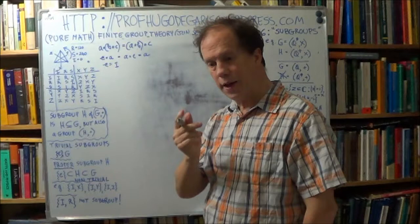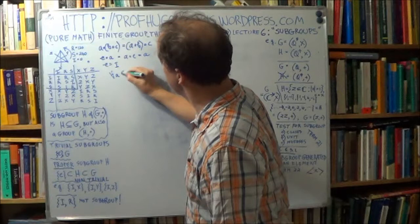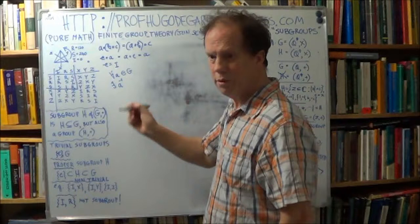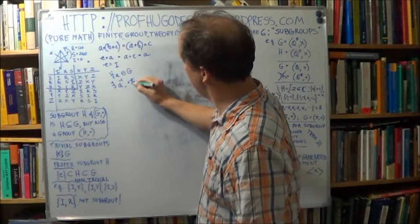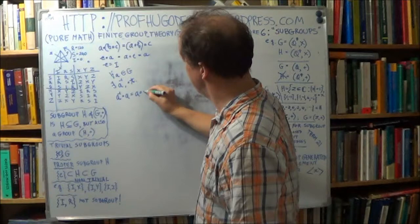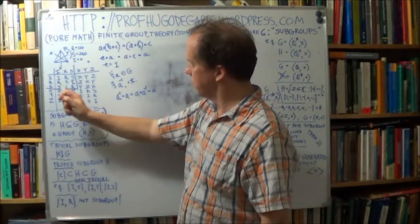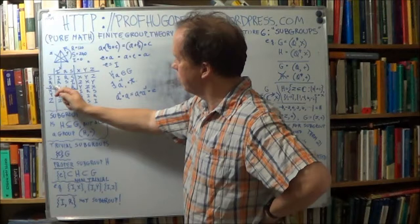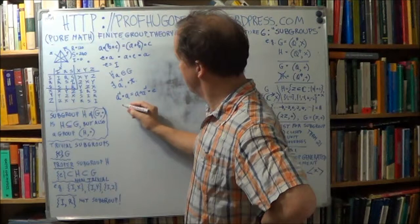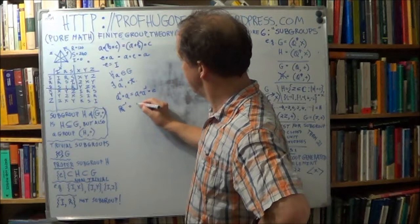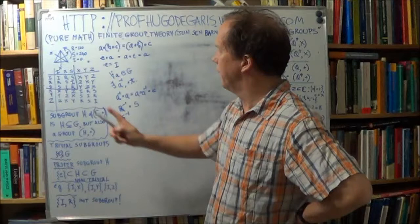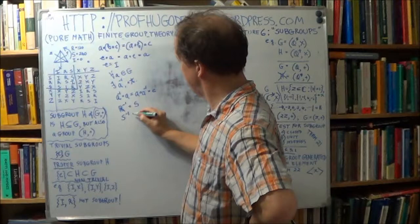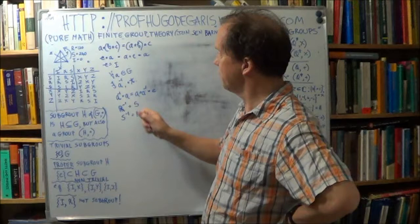And the fourth condition, each element has to have an inverse. And what does that mean? So, for all A belonging to the group, there is an inverse, that's usually another element, doesn't have to be, but usually. There is an A inverse such that A inverse times A equals A times A inverse equals E. What's the inverse of I? Well, it's just I, right? I times I gives you I. What's the inverse of R? R by what gives you I? Well, R by S gives you I. So, R inverse is S. What's the inverse of S? So S by what gives you I? R. So, each element has an inverse.